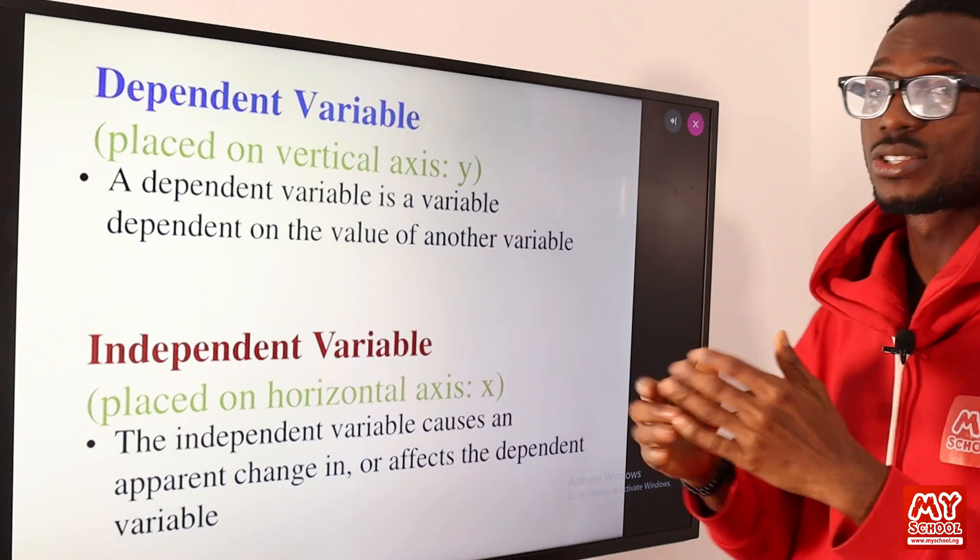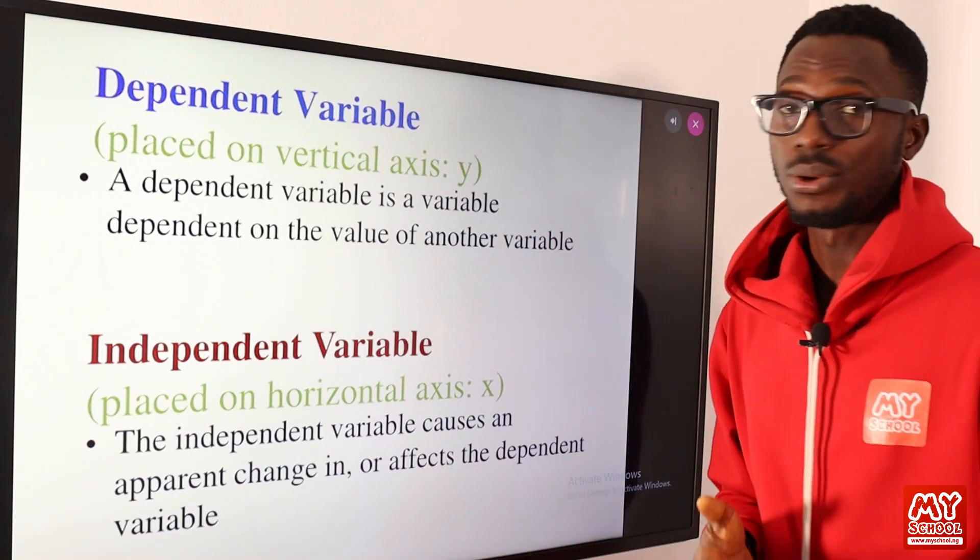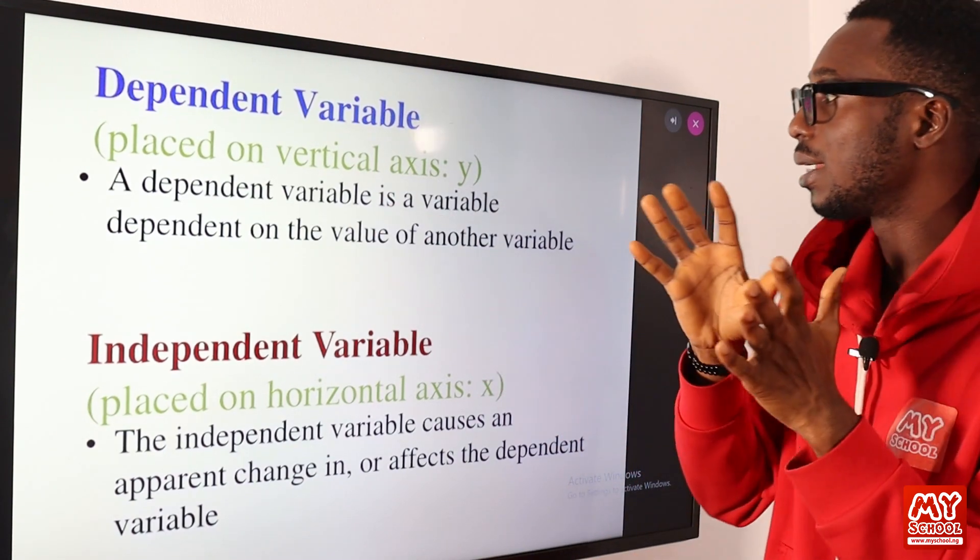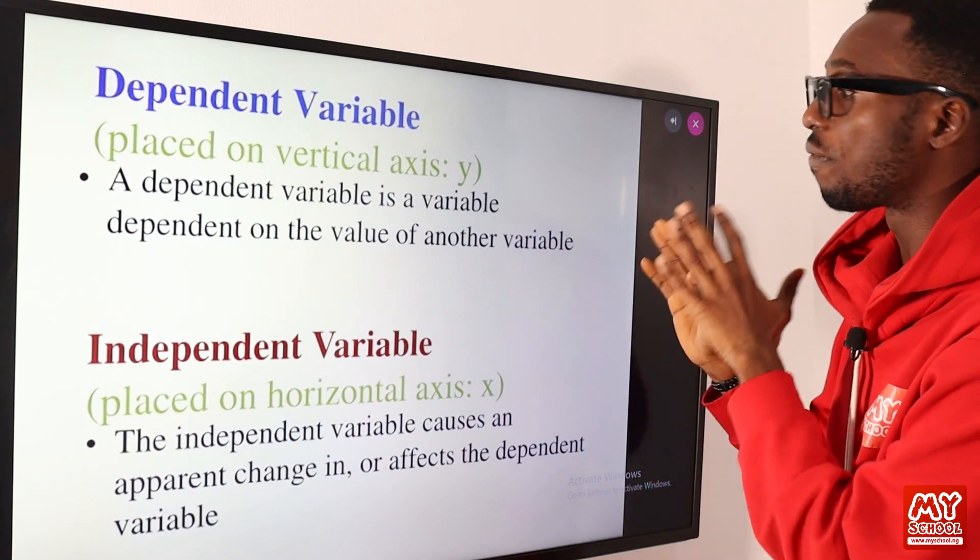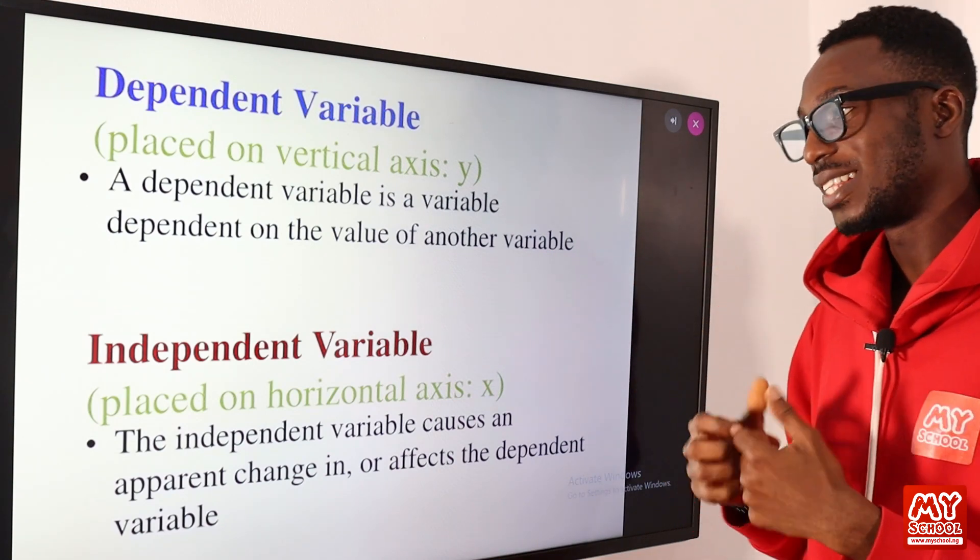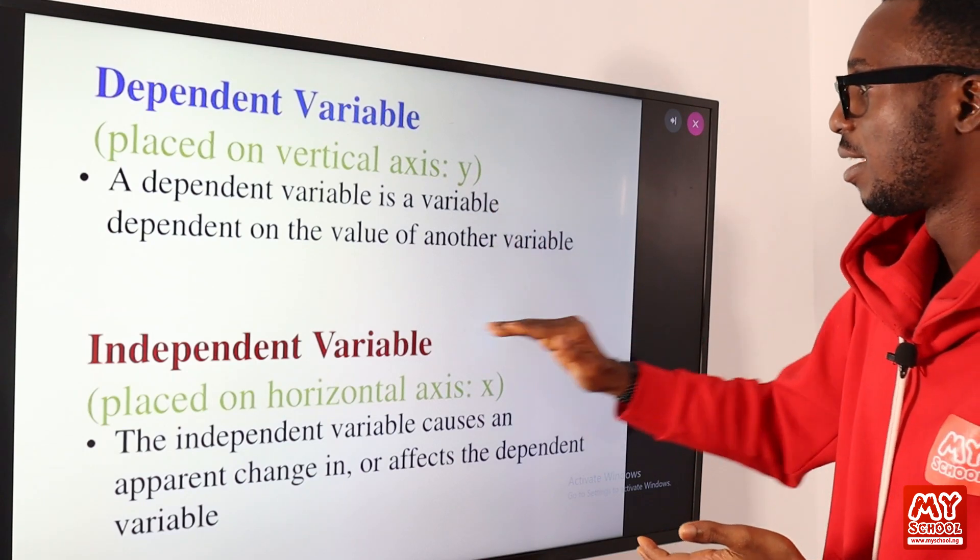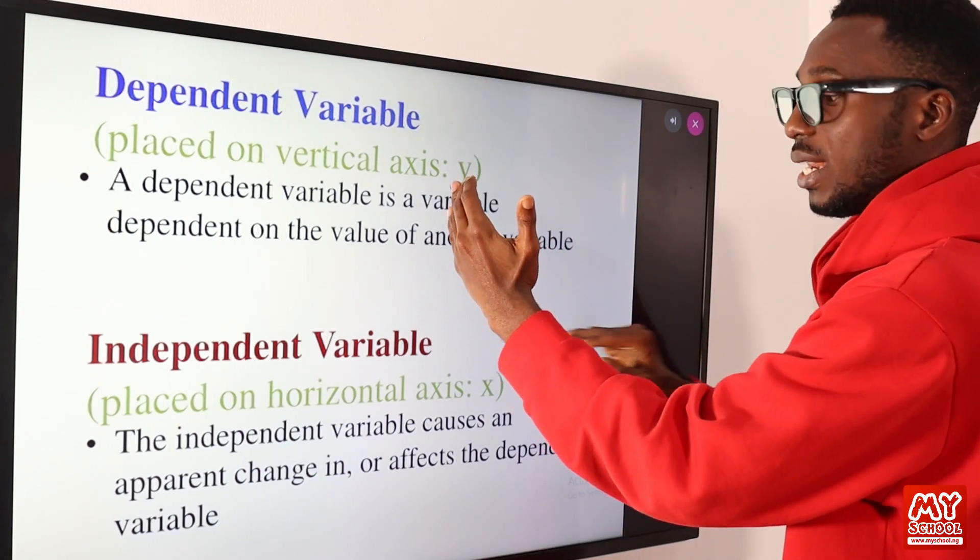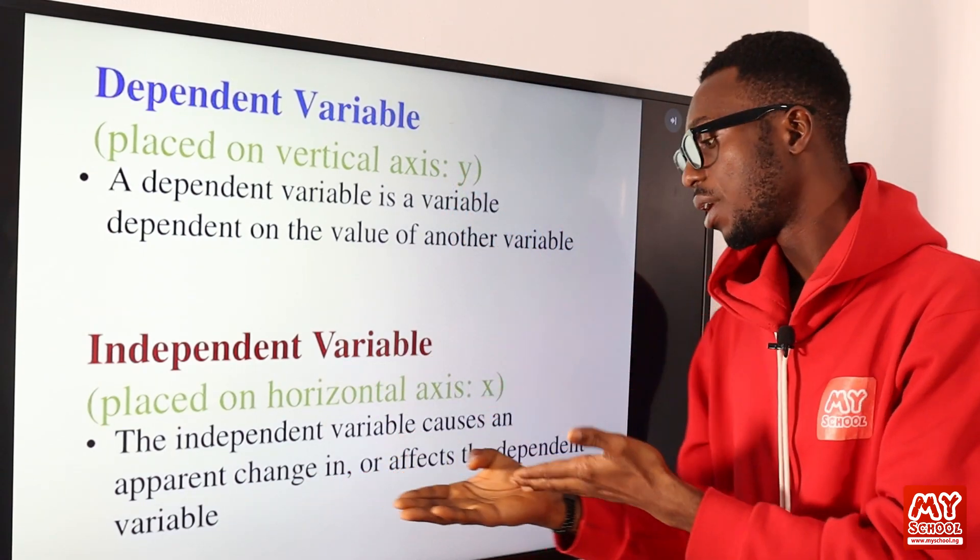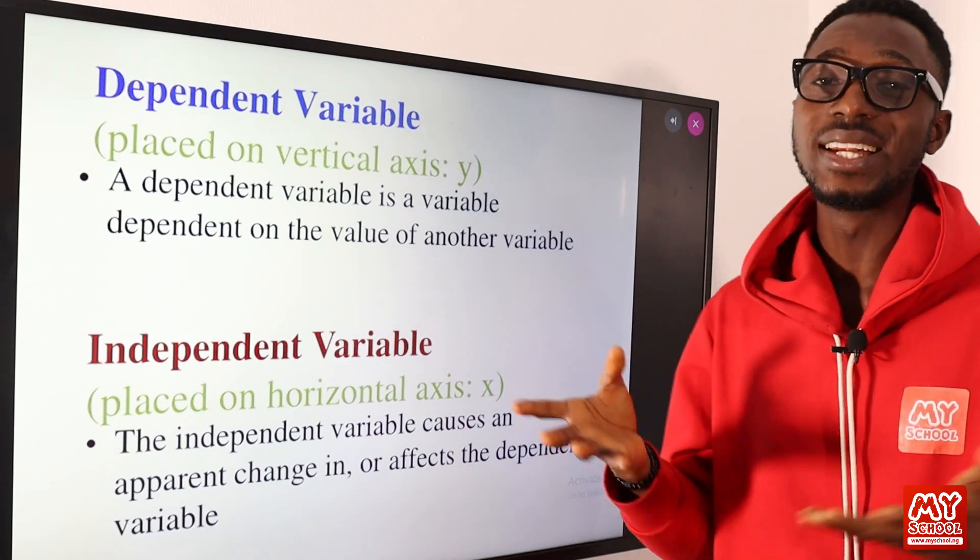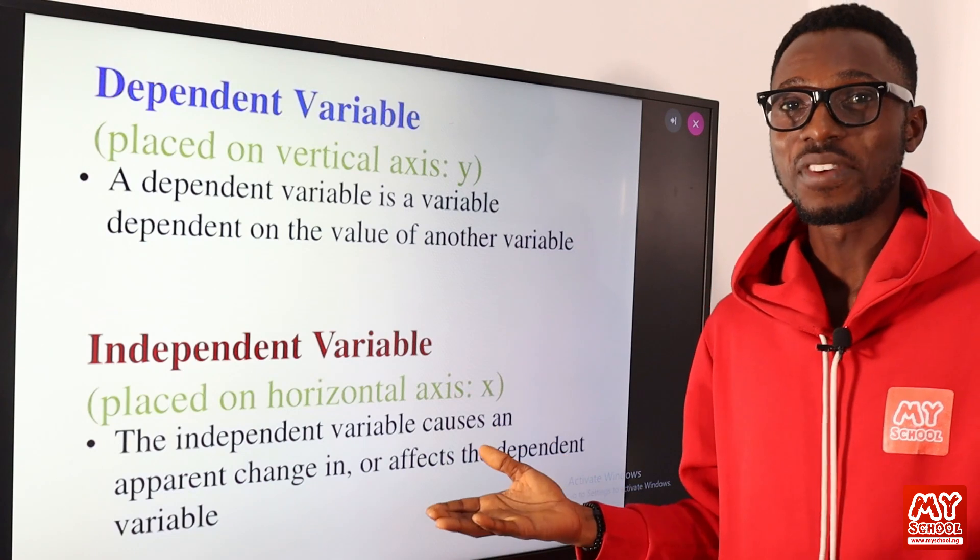It is placed on the vertical axis when you are constructing your graph. A dependent variable is a variable that is dependent on the value of another variable. Independent variable is placed on the horizontal axis. The independent variable causes an apparent change in or affects the dependent variable.